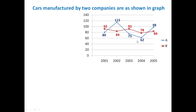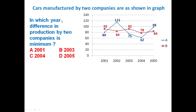Based on this graph we have to answer certain questions. The first question is: in which year is the difference in production by the two companies minimum? We have five years of data — 2001, 2002, 2003, 2004, and 2005 — showing cars manufactured by the two companies each year.